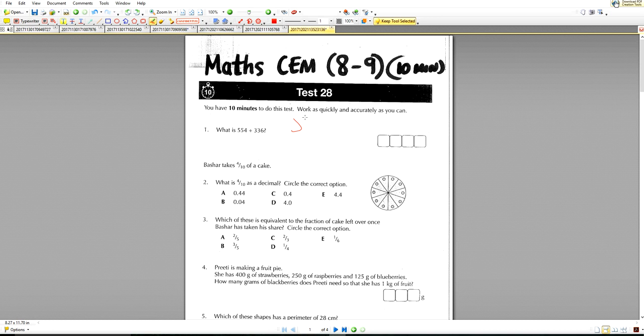So we have the first question, which is our straightforward question on addition. 554 plus 336. We just line them up, add them up the way we do a traditional question. That gives us an answer of 819. Now don't worry about having extra space here. They give you extra boxes. It doesn't mean you needed four digits in your answer. Two digits is fine.